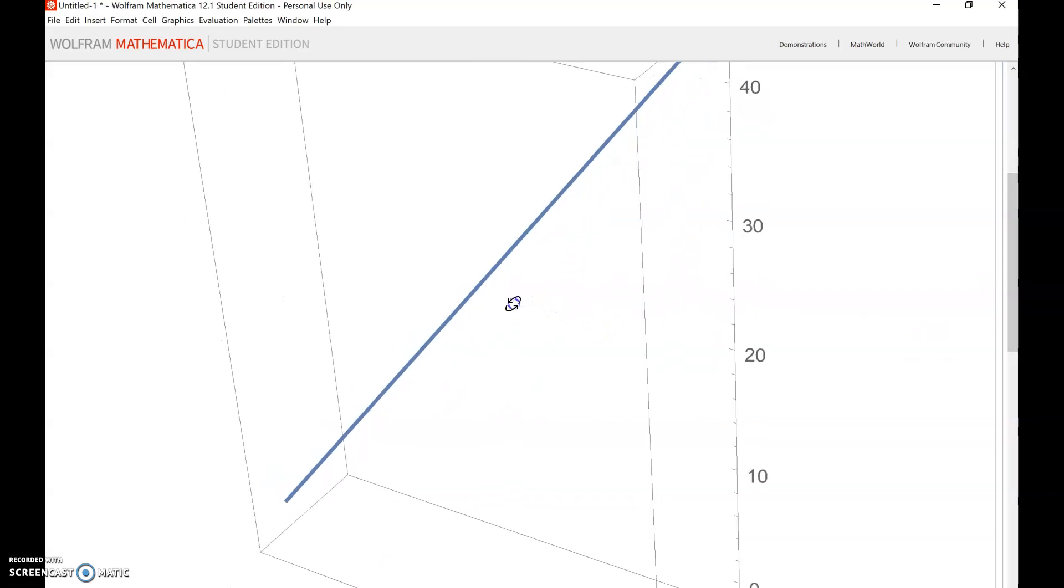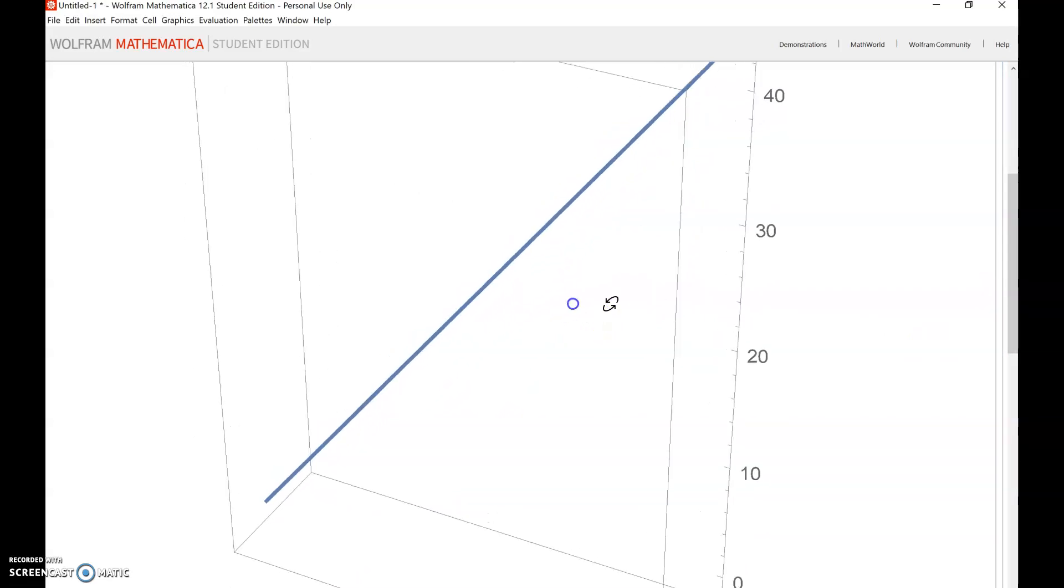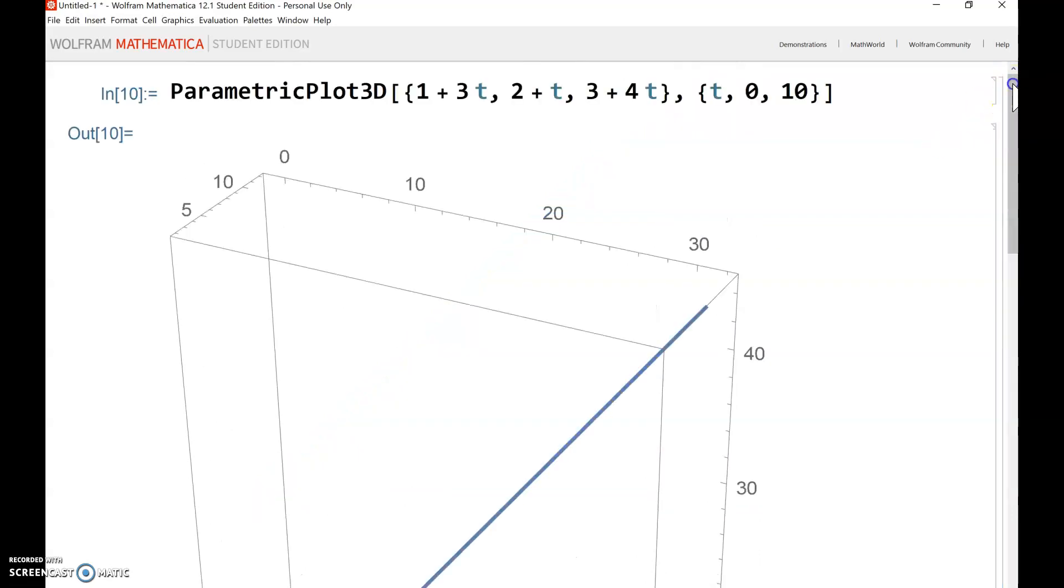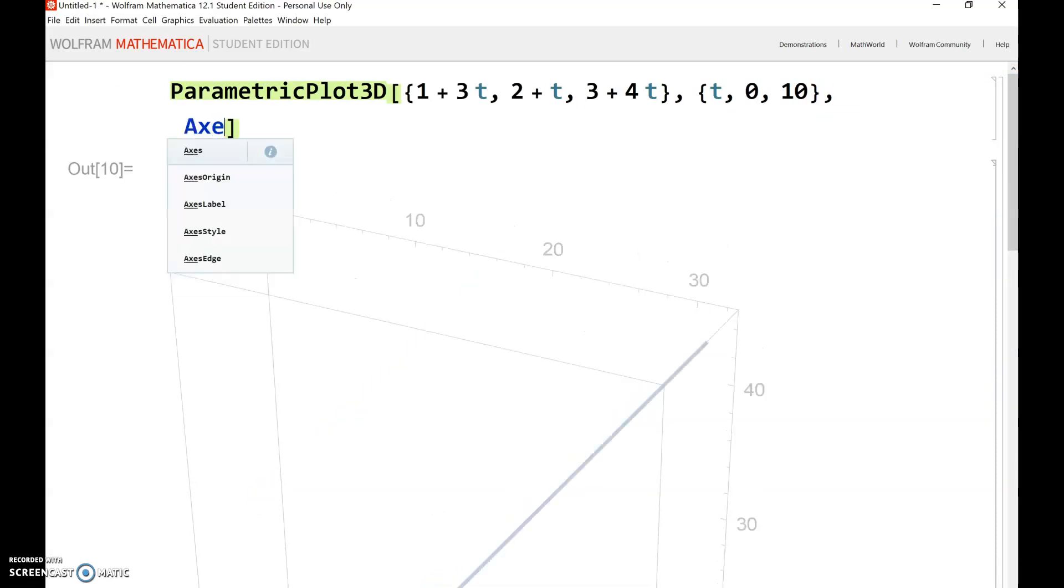It's kind of hard to tell, the default is put into a box, so let's do a couple of options here. Options are using arrows, and so let's just do AxesOrigin, this is a useful option, minus sign greater than sign which converts to an arrow, and then let's just put the origin at {0,0,0}.